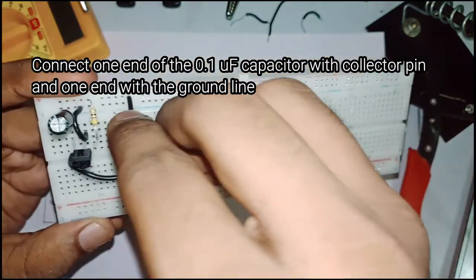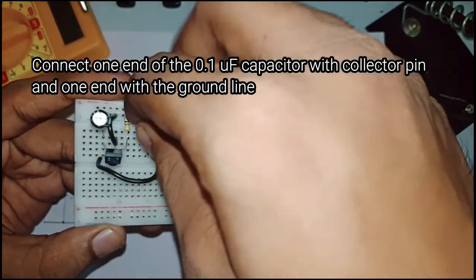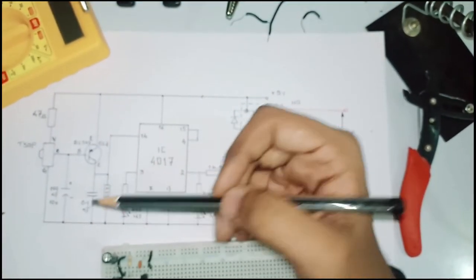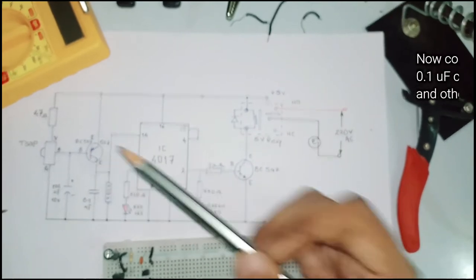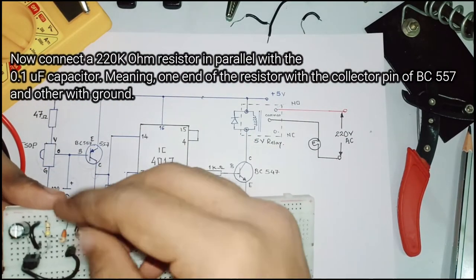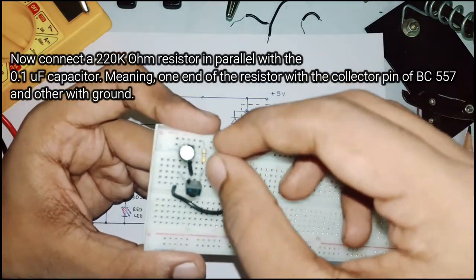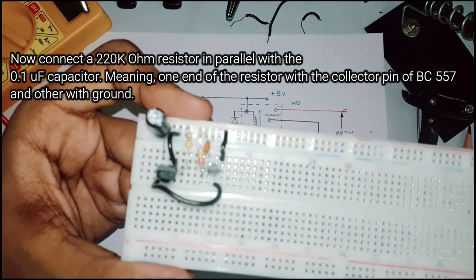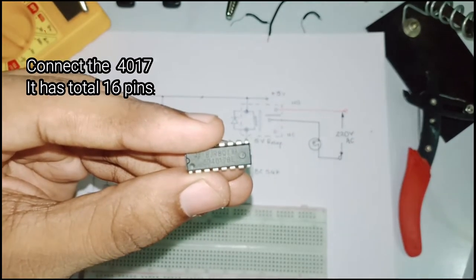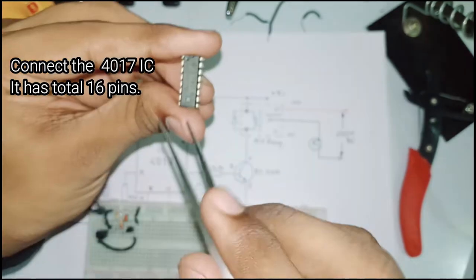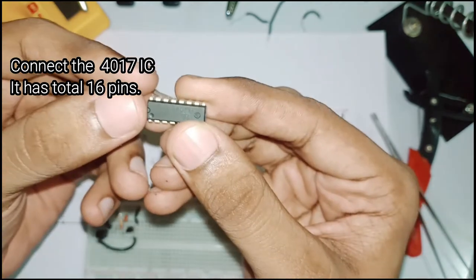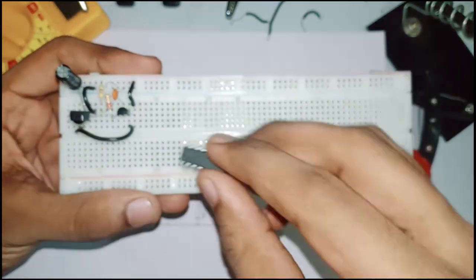Now talking about the IC 4017, it is a decade counter which means it has 10 outputs. Every time the clock pulse is given to its pin number 14, the output changes sequentially. For example, consider a school: every time the bell rings, the lecture or period changes. Exactly the same way, the 4017 IC is going to function.